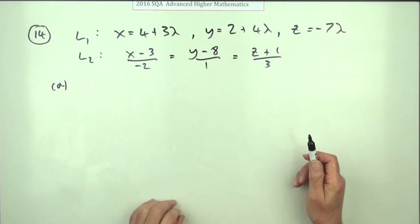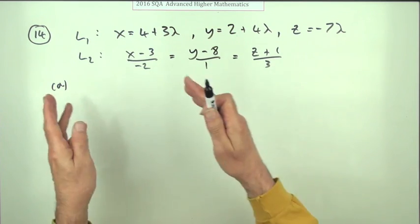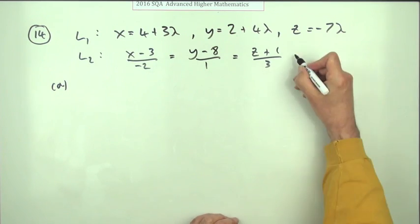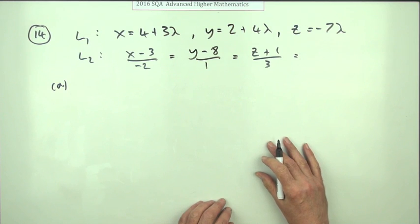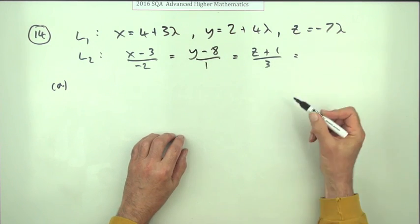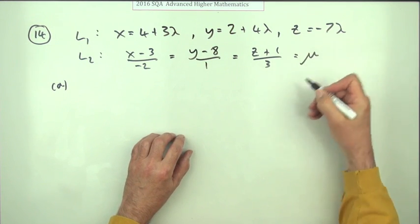Right, well the first thing we want to do is put that in parametric form the same way as this so you can compare the coordinates. So we need to invent a parameter for it. Well they've gone Greek with lambda so we'll use mu.